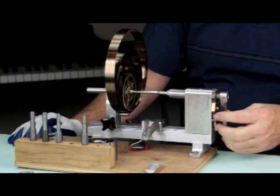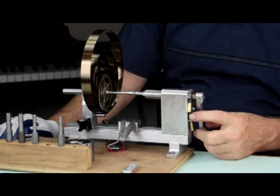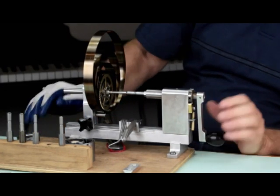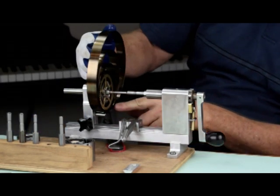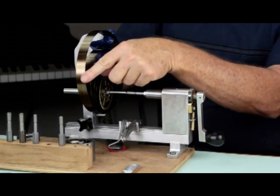If unsure of the proper direction, look at the loop end of the mainspring. To wind the spring, the winding handle will have to turn in the direction of the arc as it curves up from the loop end.